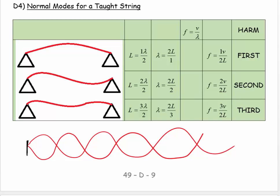The rules: you have a node at one end of a tight string because that's the bridge, and you have a node at the other end because that's the fret. No oscillations where your finger is, of course.